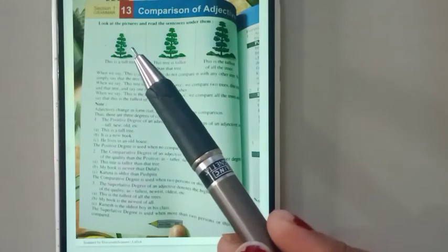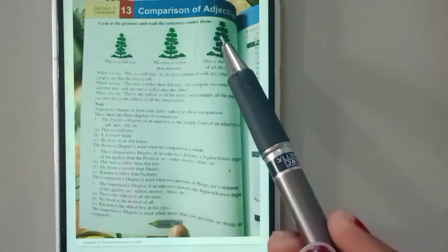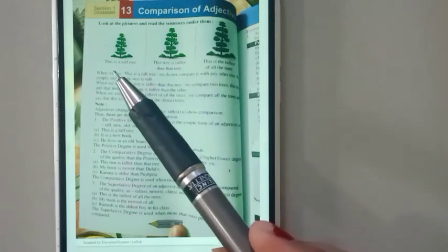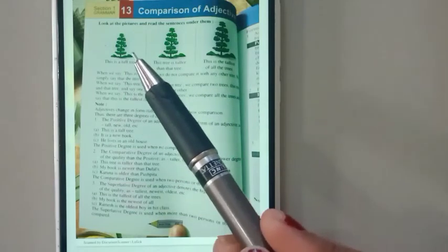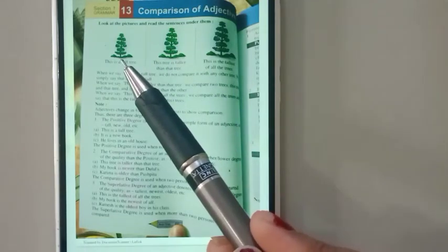But here we are going to learn about the comparison of adjectives. Meaning we can see that is a tree, but that tree is taller than this tree.